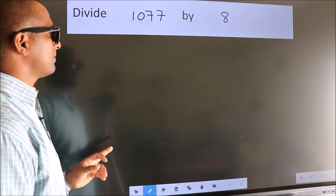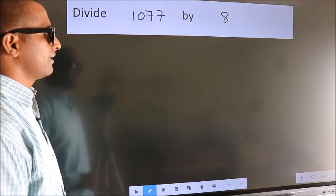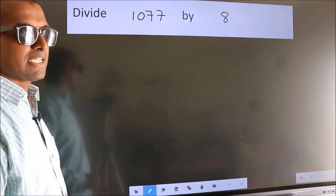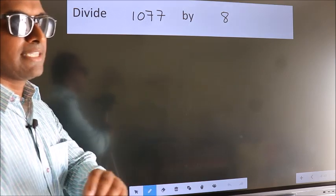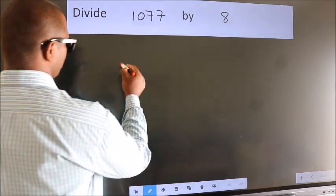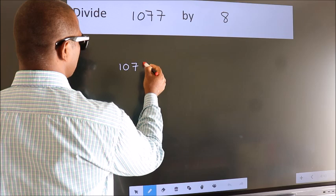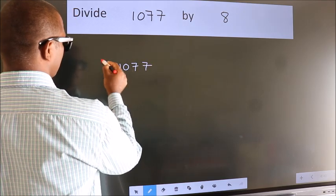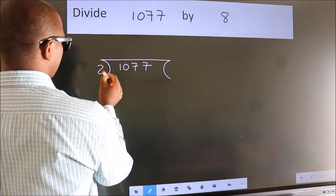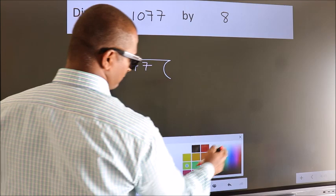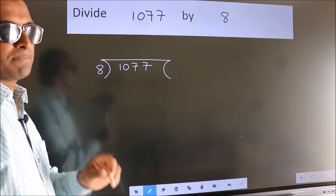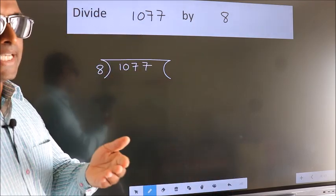Divide 1077 by 8. To do this division, we should frame it in this way. 1077 here, 8 here. This is your step 1.